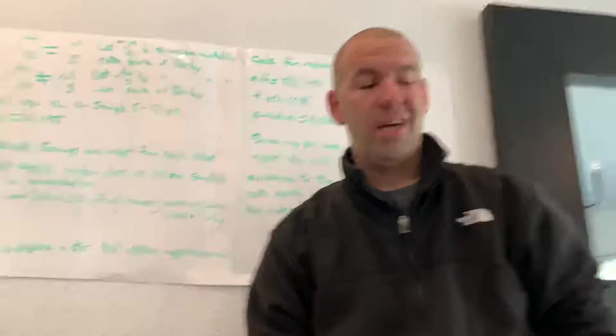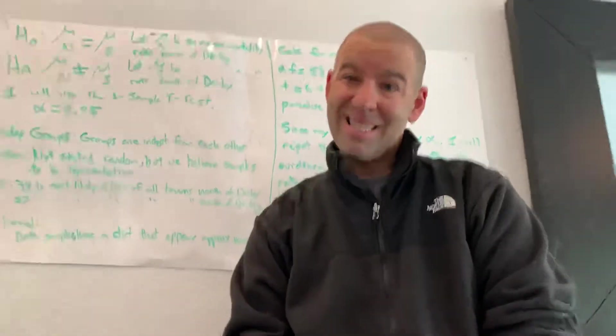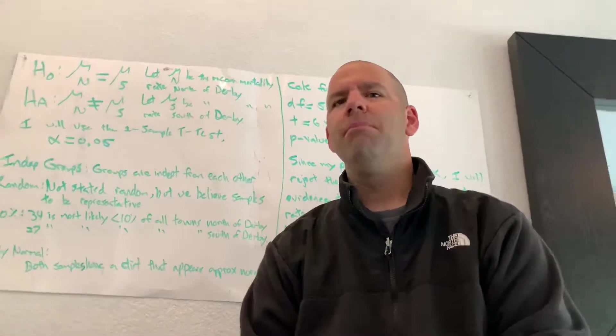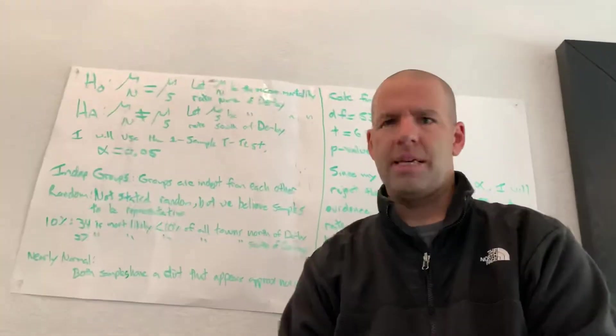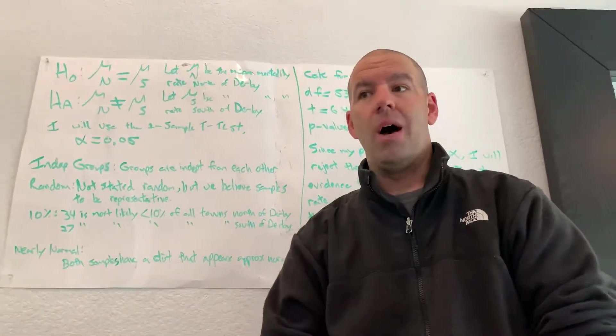So what does an outlier do? How is that going to cause a problem? Well, outliers, if you remember, don't affect medians, but they do affect means. They increase the mean. So that mean that was so much bigger for north of Derby might be so much bigger because of that outlier.